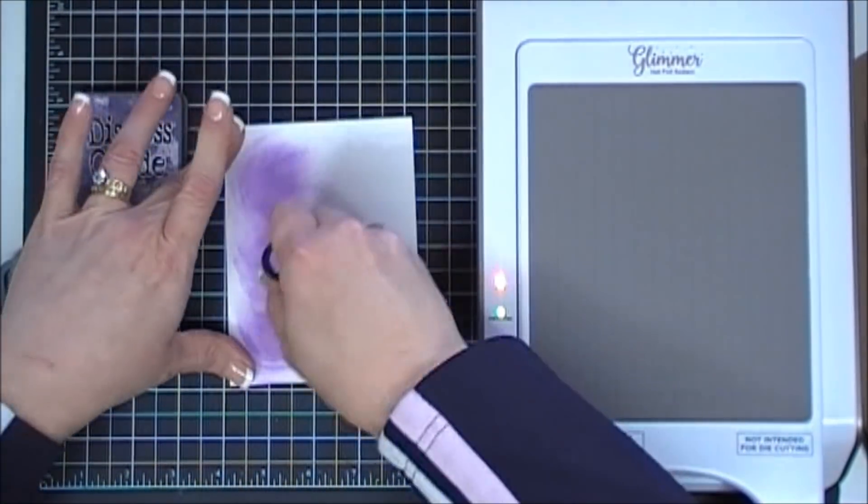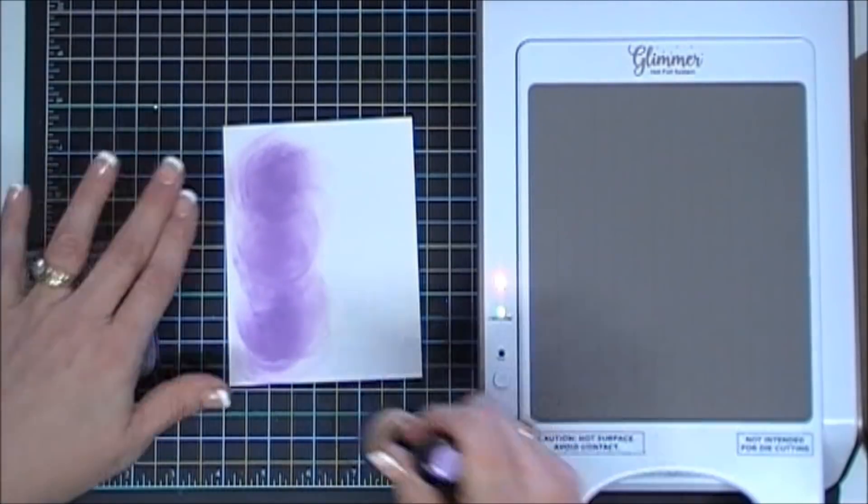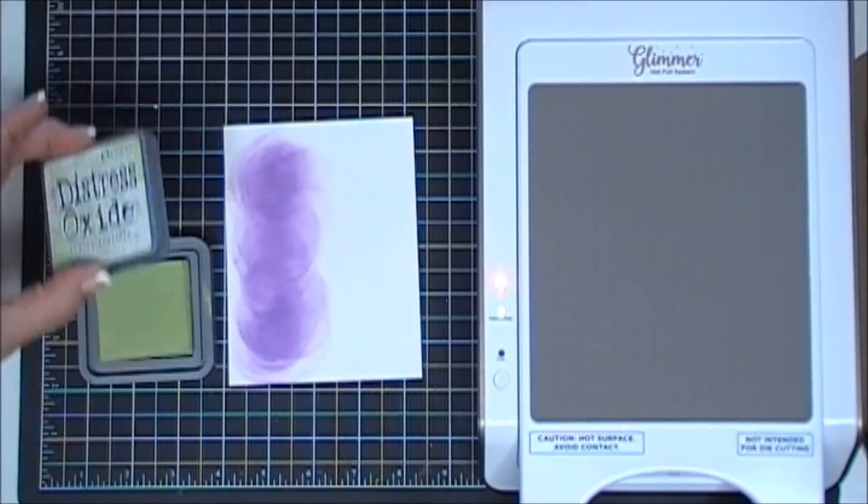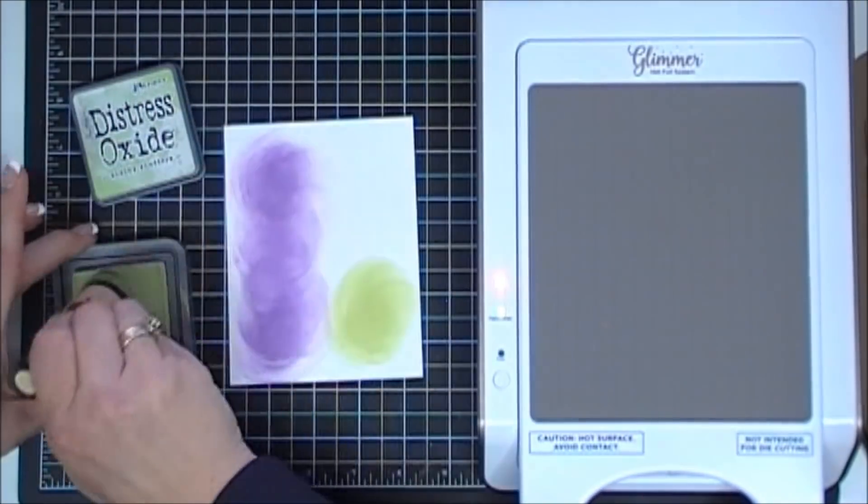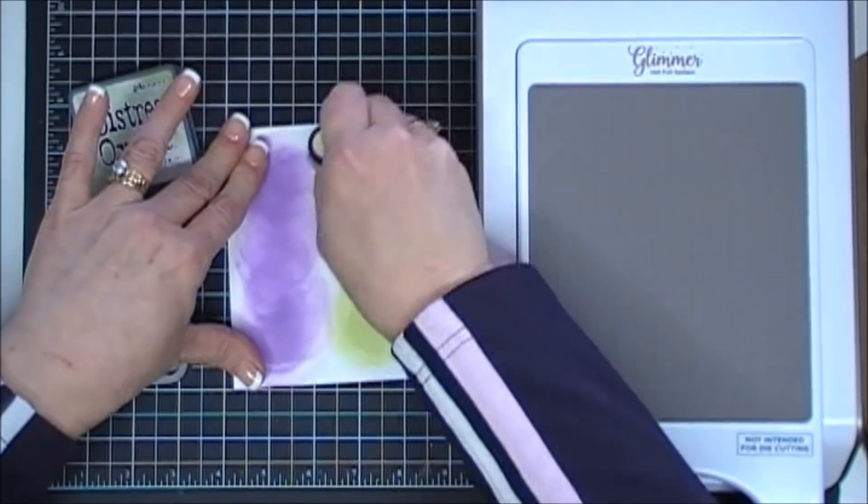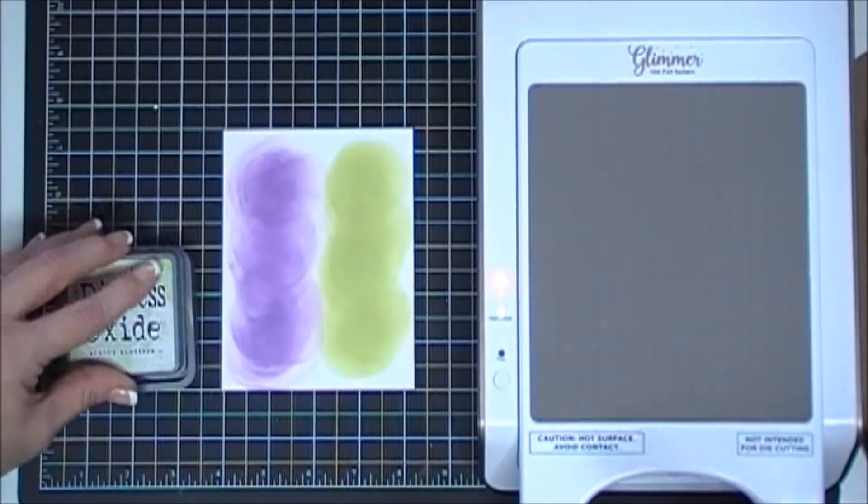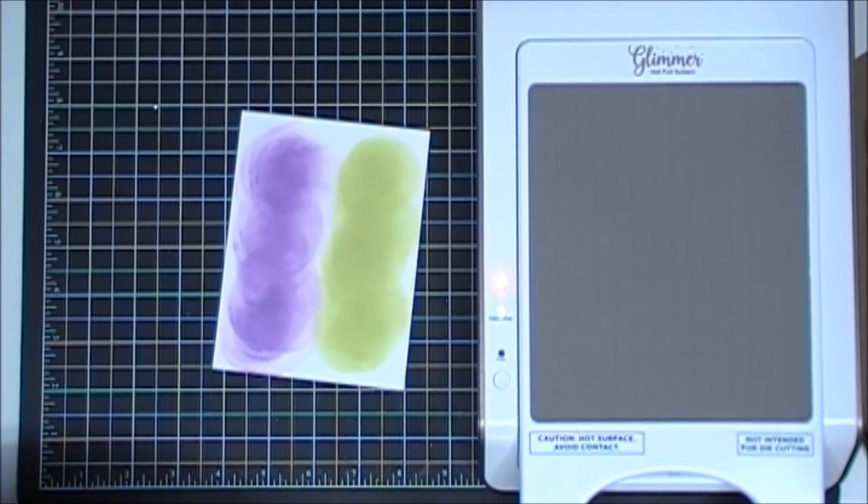I'm going to take some distress oxide ink and we'll do a little bit of ink blending with some Dusty Concord. I'm not really blending it together very well because we're going to die cut out a few of our flourishes with the purple.